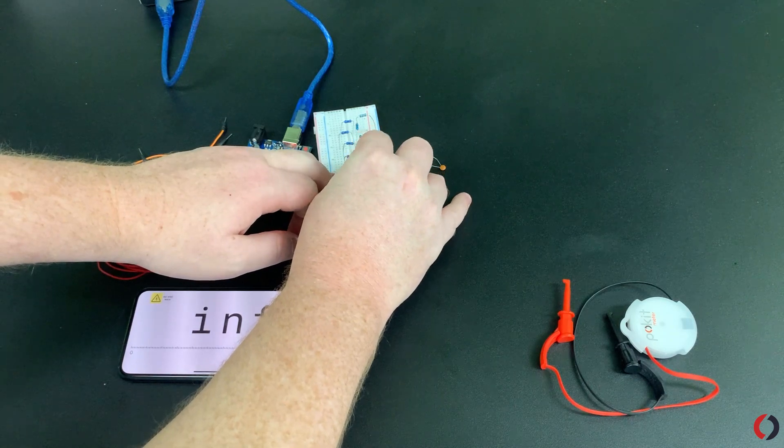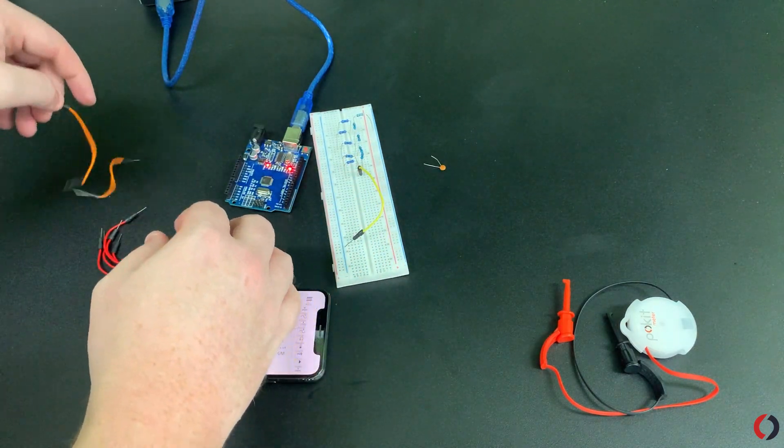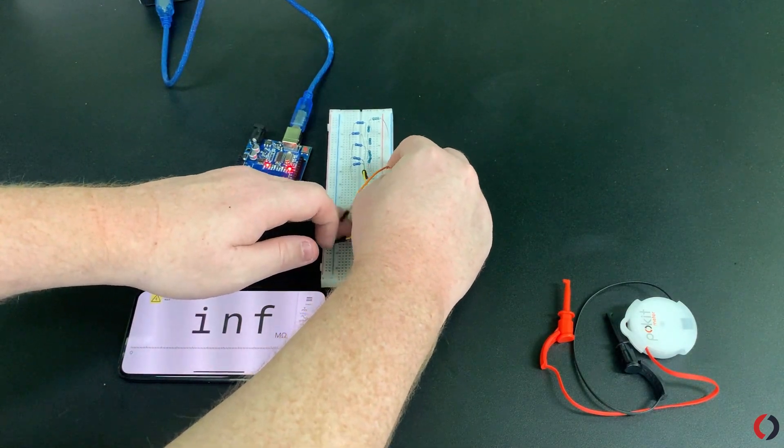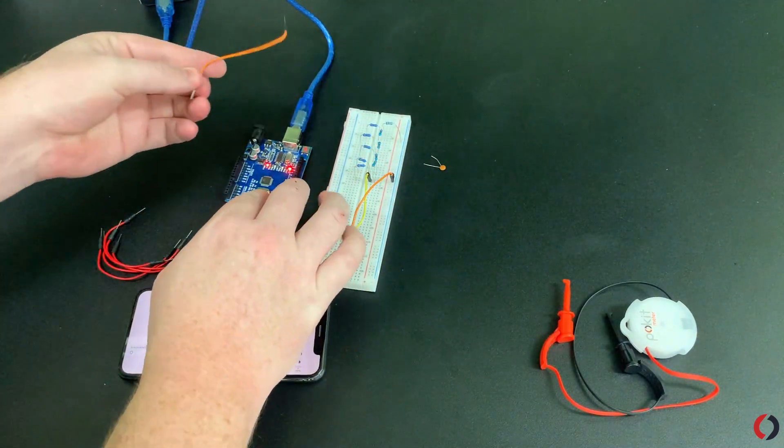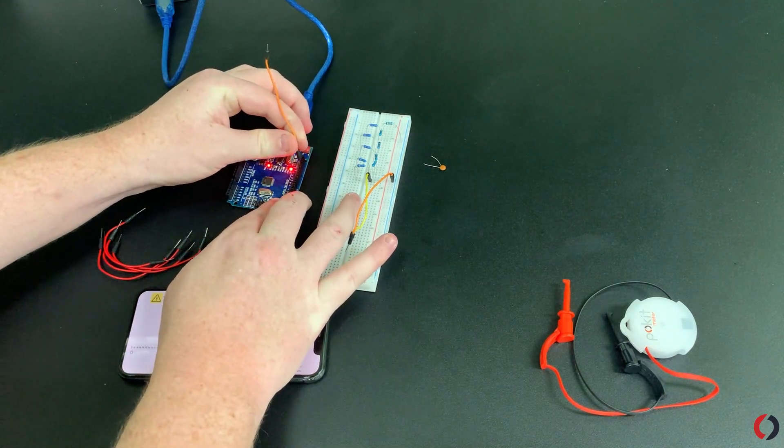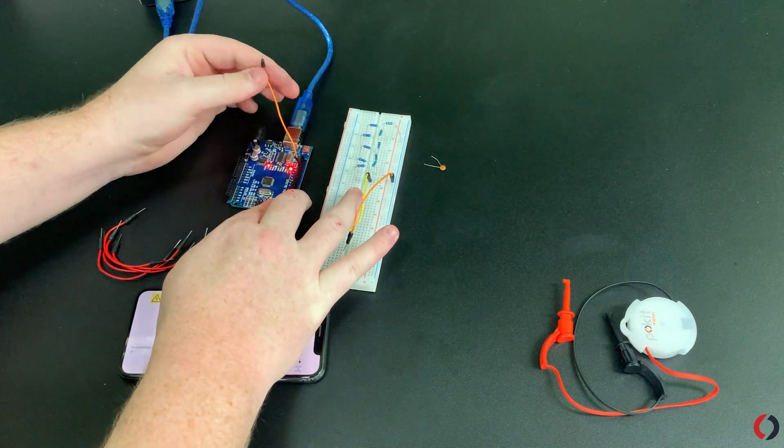And we'll make one of these orange leads our ground. We'll have ground here, and then we'll make the ground from the ground pin on the Arduino.